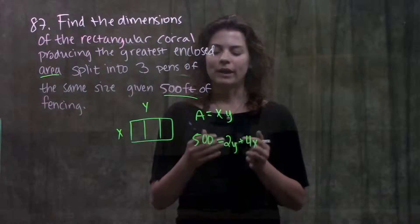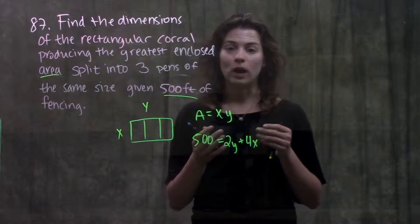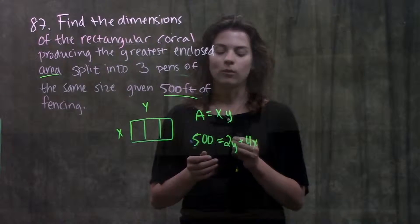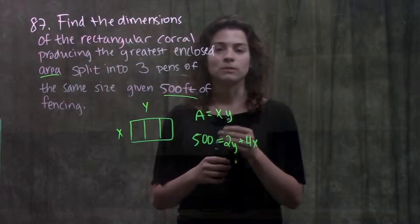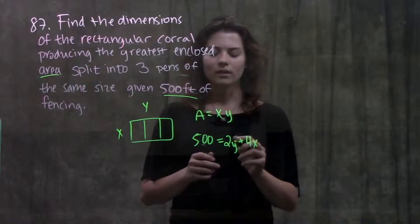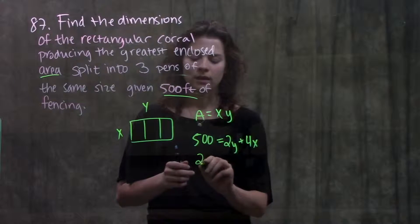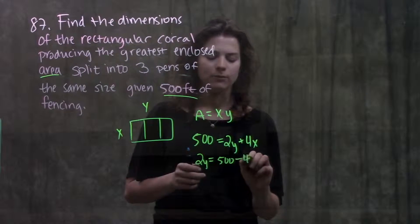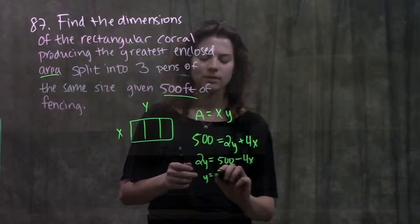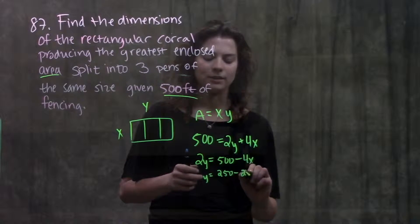Alright so now I have two functions in terms of x and y. To solve for this I can solve for one variable in this function and then plug it in to my area formula to get it in terms of just one variable. So to do that let's solve for y. To solve for y we'll get 2y is equal to 500 minus 4x and dividing by 2 this will become 250 minus 2x.